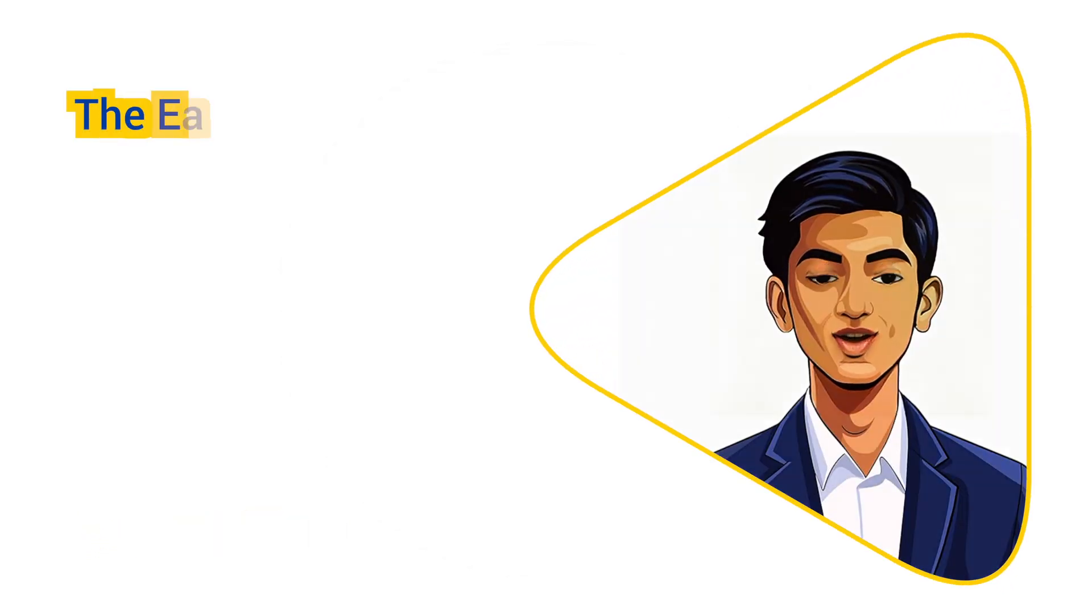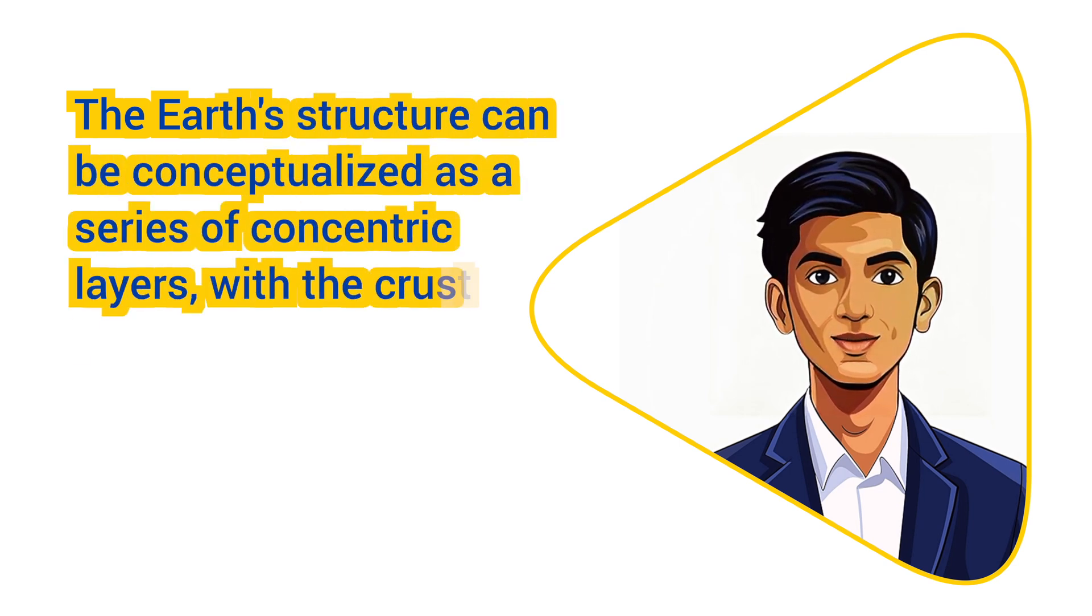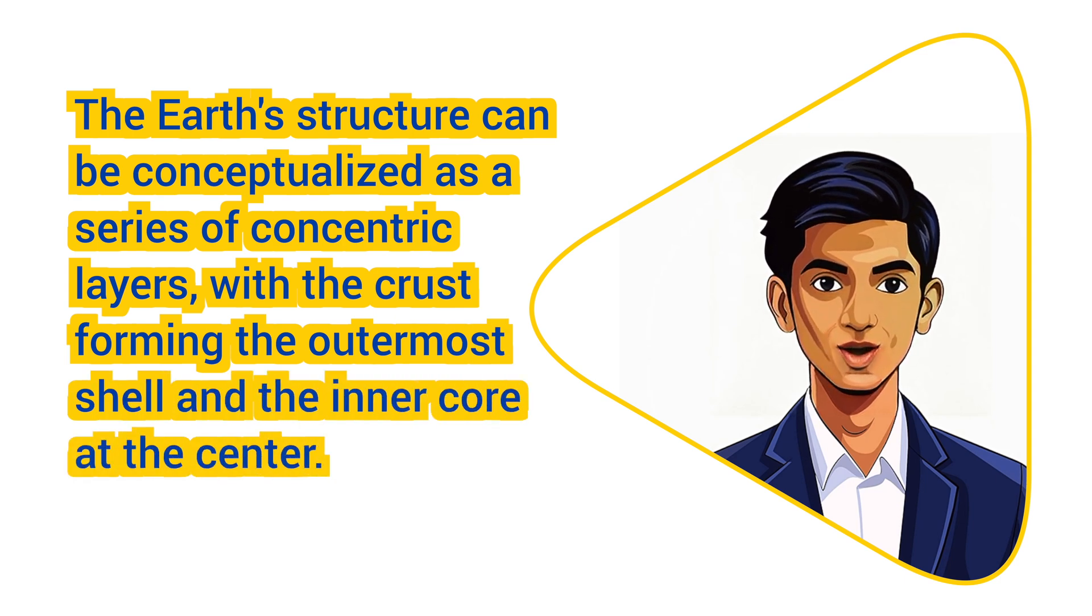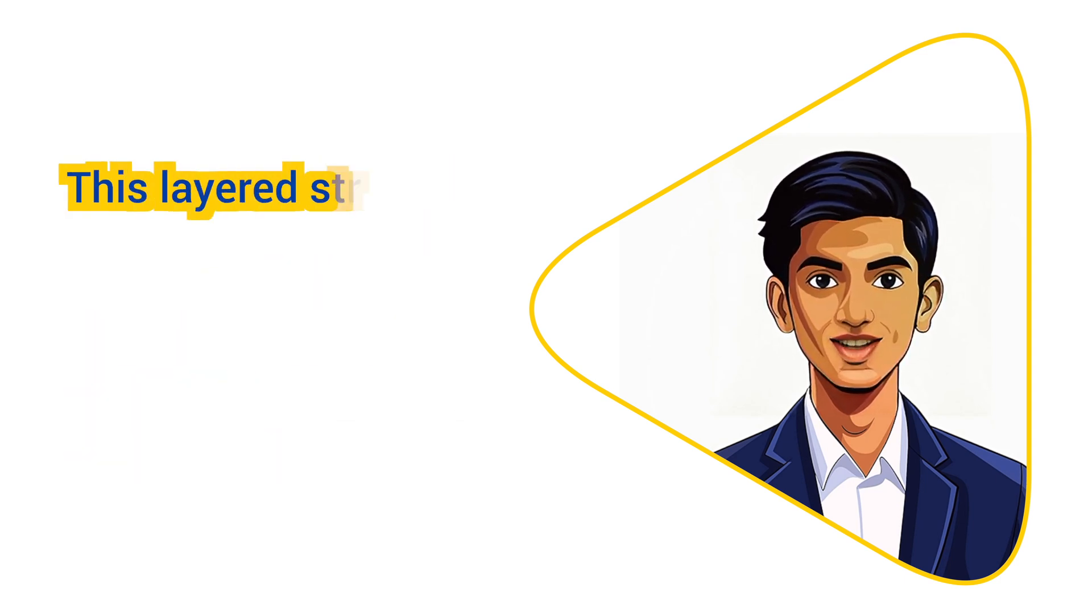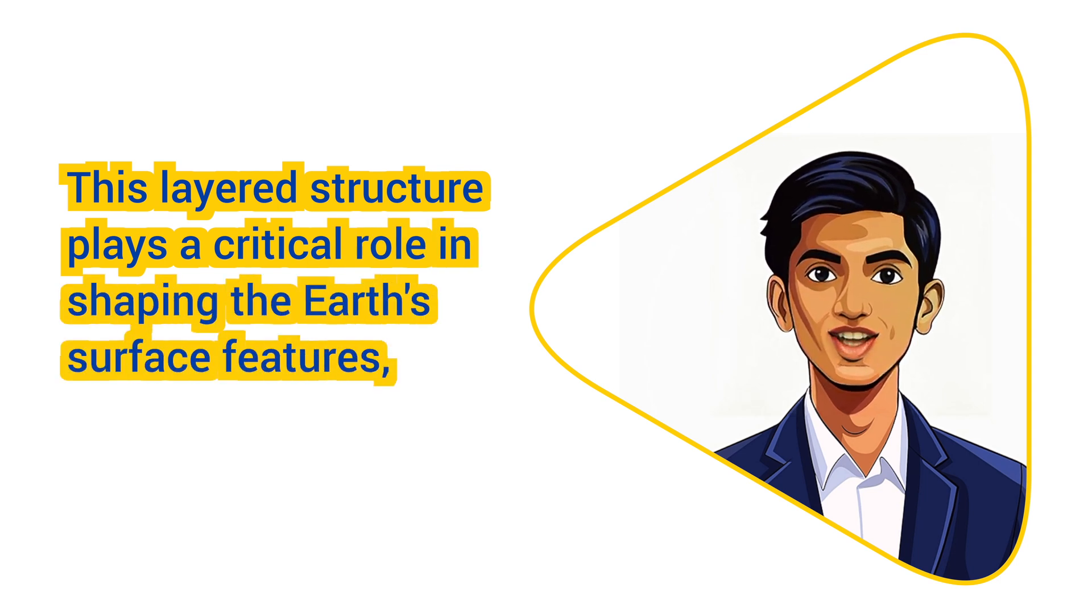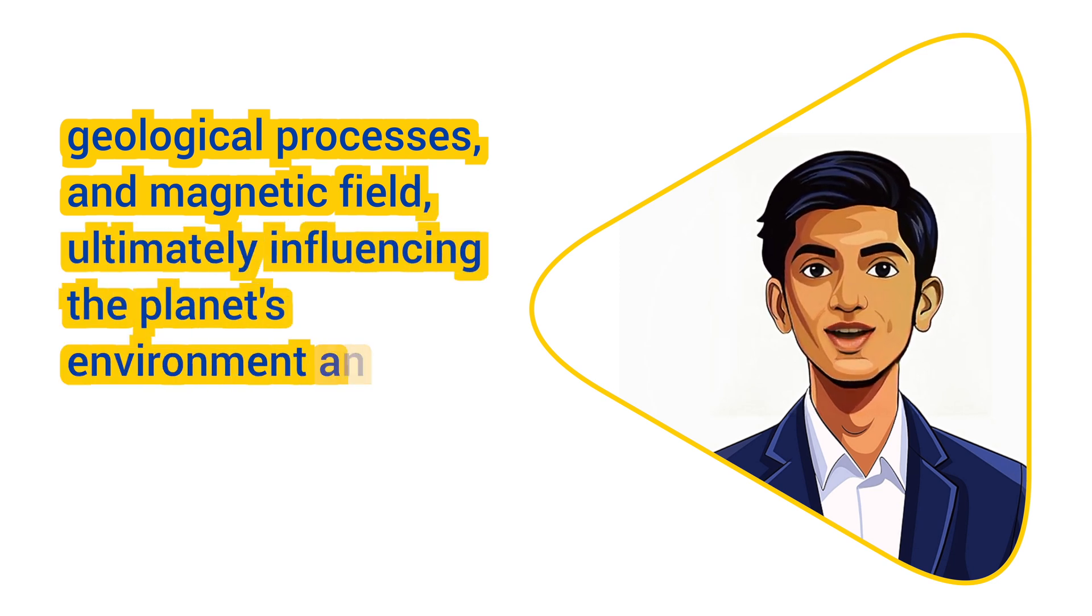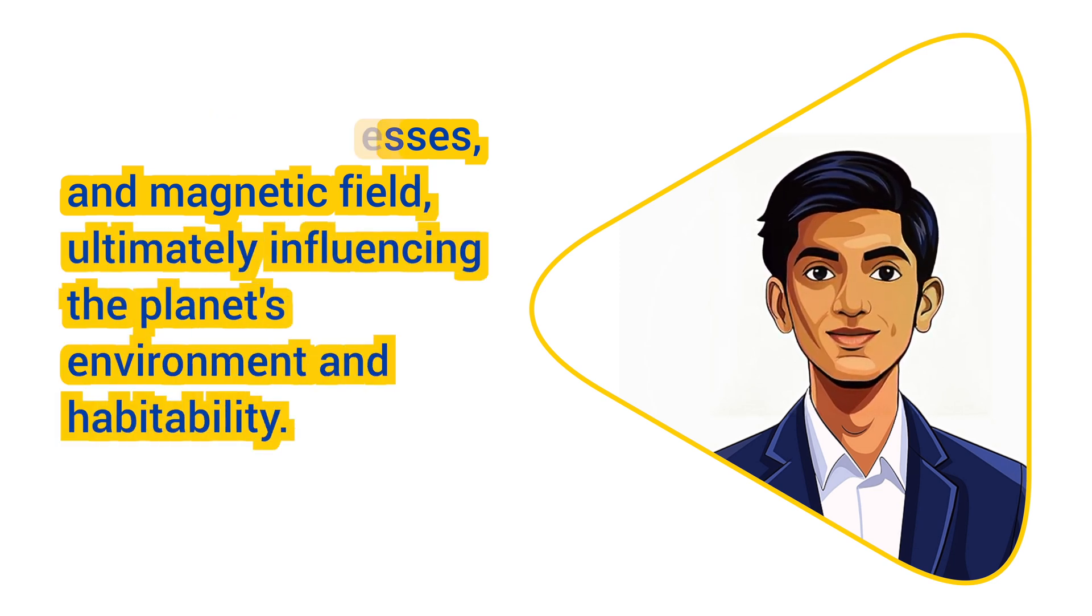Overall, the Earth's structure can be conceptualized as a series of concentric layers, with the crust forming the outermost shell and the inner core at the center. This layered structure plays a critical role in shaping the Earth's surface features, geological processes, and magnetic field, ultimately influencing the planet's environment and habitability.